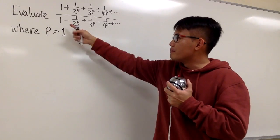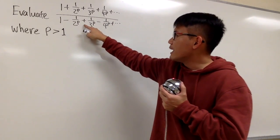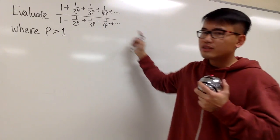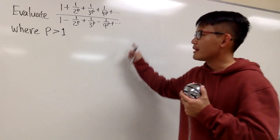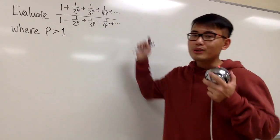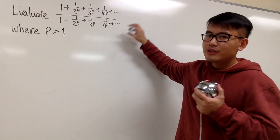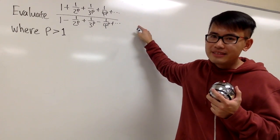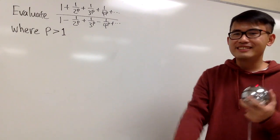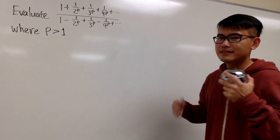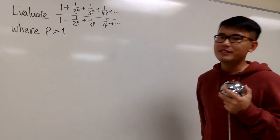And for the bottom here, this is positive, this is negative, this is positive, this is negative, and so on. I'm not going to get into too much detail, but this also converges. Convergent divided by convergent — you know the answer at the end has to be nice. And now let's think about how we can make some progress with this.